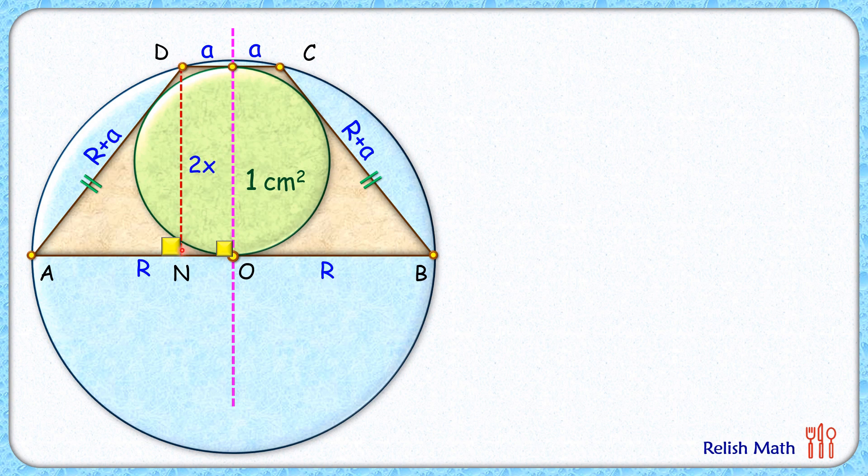Now if you look at this triangle, let's check the length AN. Here NO length will be same as a centimeter and AO that's the radius R. So AN is nothing but R minus a. And NB length will be this radius plus ON which is a, so NB will be R plus a.